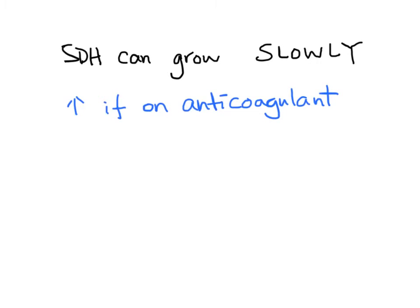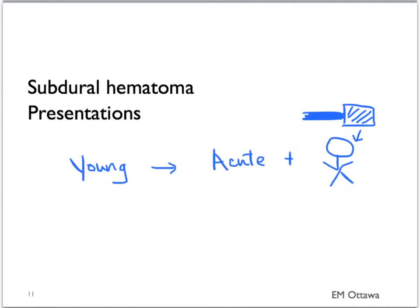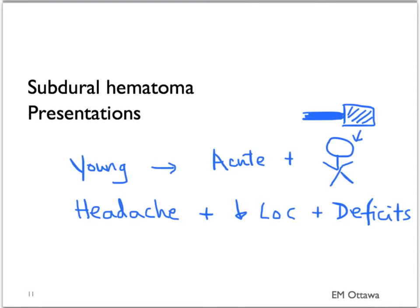There are various presentations of subdural hematomas. In younger patients, since they do not have a lot of brain atrophy, their presentation is usually acute after trauma. Their presentations will include headache, decreased level of consciousness, and neurological deficits.